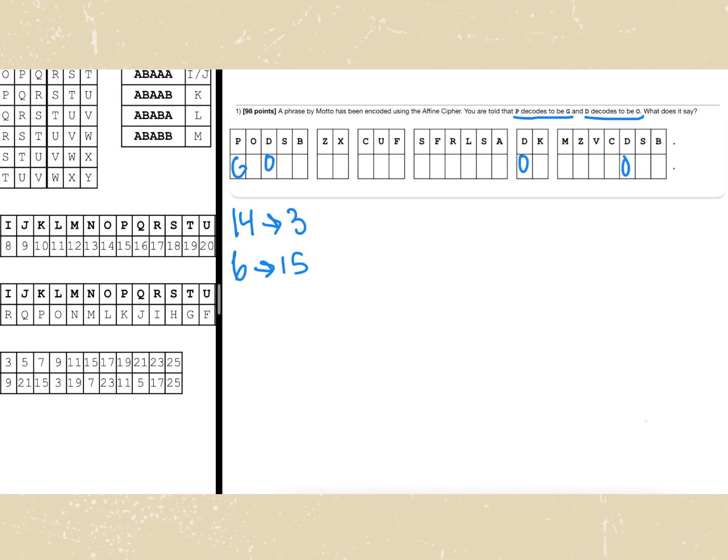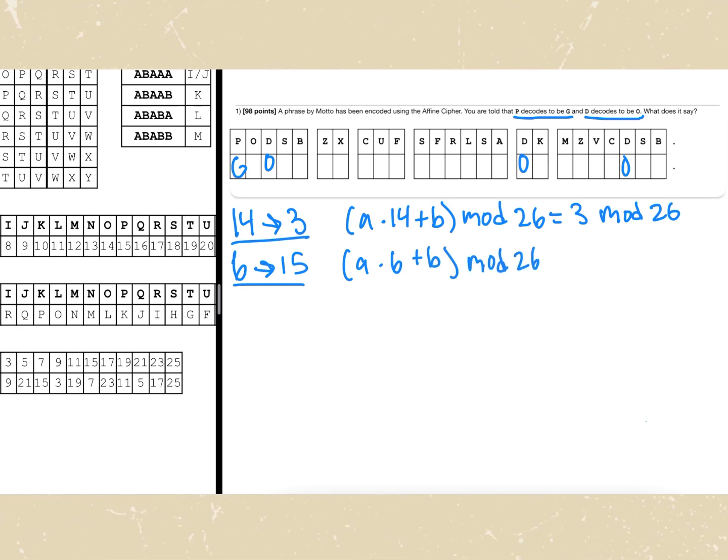So after we have these two different formulas we want to shift it into a real formula. We want to create this into a times 14 plus our b value mod 26 is equal to 3 mod 26. After that we want to do the same thing for the bottom one with a times 6 plus b mod 26 is equal to 15 mod 26.